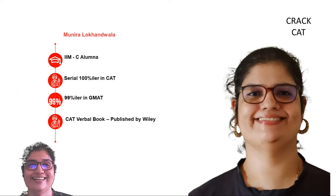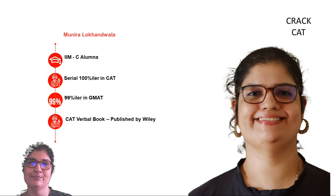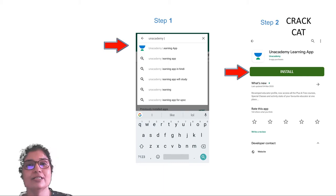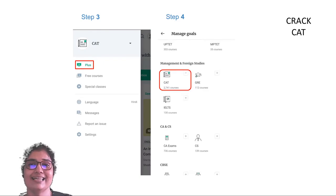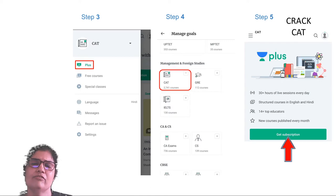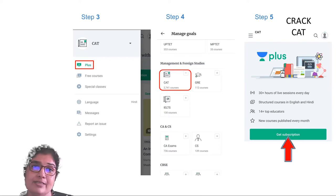Before we jump into it, I'm Munira Lokhanwala. I'm a Calcutta alumna, a serial 100 percentiler in CAT and a 99 percentiler in GMAT. I also have a CAT verbal book published by Wiley and available on Amazon. You can find me on the Unacademy CAT channel and on the Unacademy app. Go to the play store, search for the Unacademy Learning app and install it. Within that, you have to enroll for the Plus CAT courses and get a subscription. We have a lot of Plus courses — courses with complete coverage, workshops, revisers, and a huge team of great educators, some of them 100 percentilers like myself.